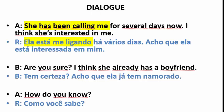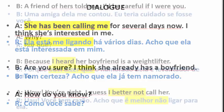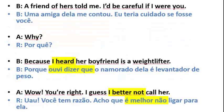Dialogue: 17. She has been calling me for several days now. I think she's interested in me. 18. Are you sure? I think she already has a boyfriend. 18. How do you know? 18. A friend of hers told me. I'd be careful if I were you. 18. Why? 19. Because I heard her boyfriend is a weightlifter.